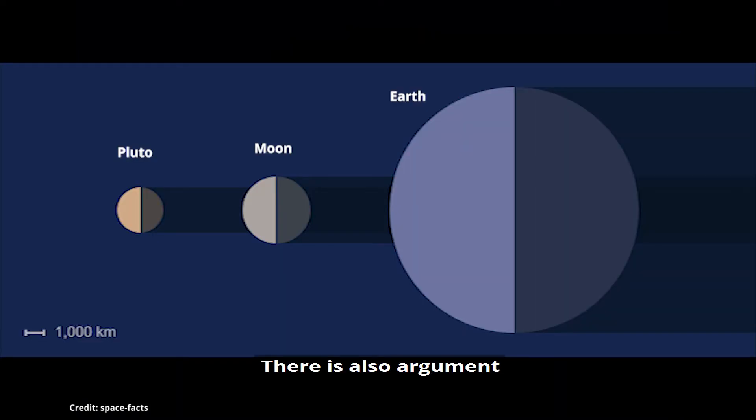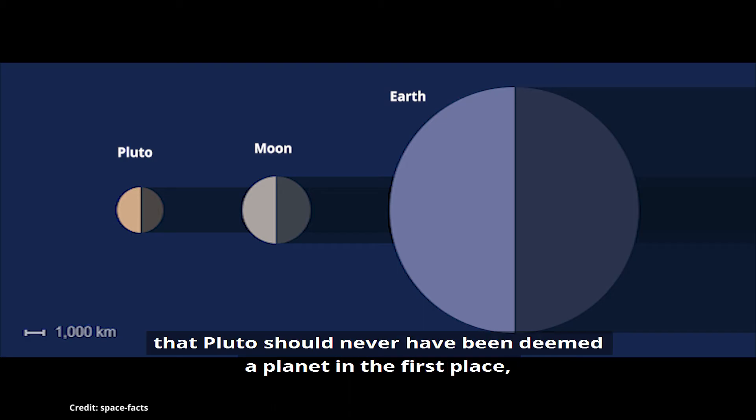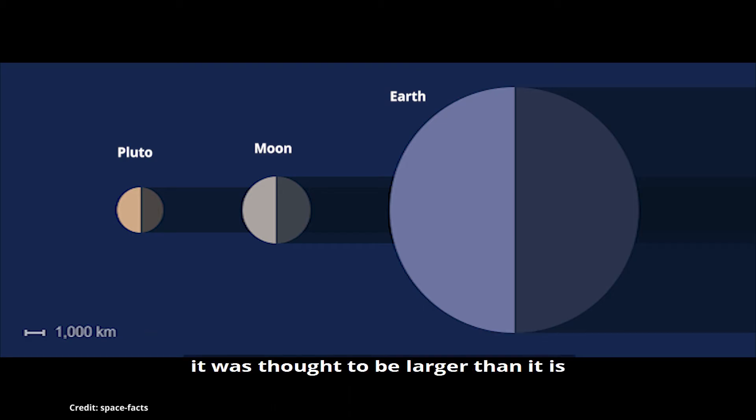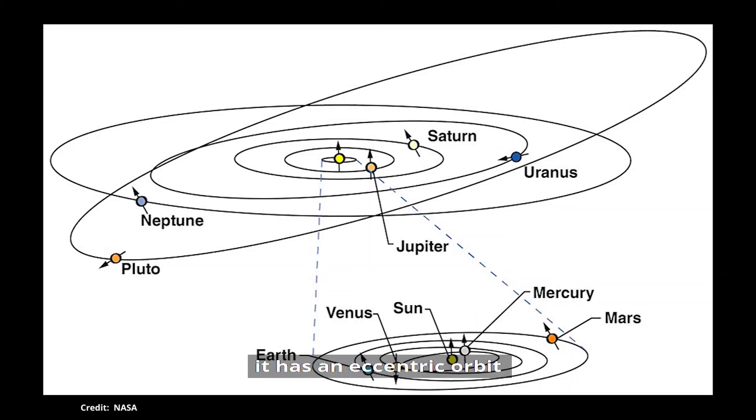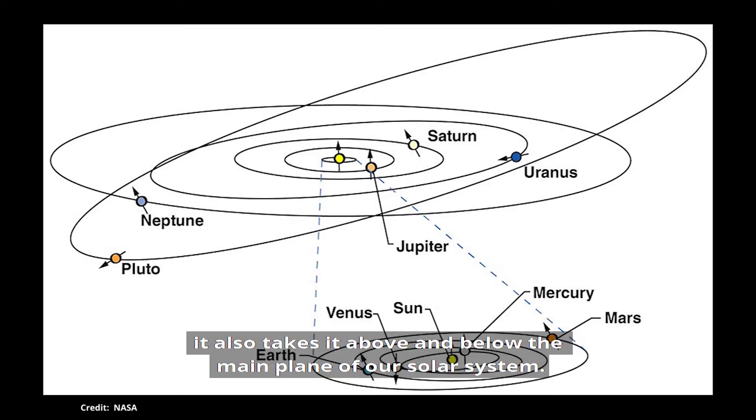There's also arguments that Pluto should never have been deemed a planet in the first place. It was thought to be larger than it is. It's actually smaller than our moon. It has an eccentric orbit that puts it in front of Neptune for 20 years of its orbit. It also takes it above and below the main plane of our solar system.